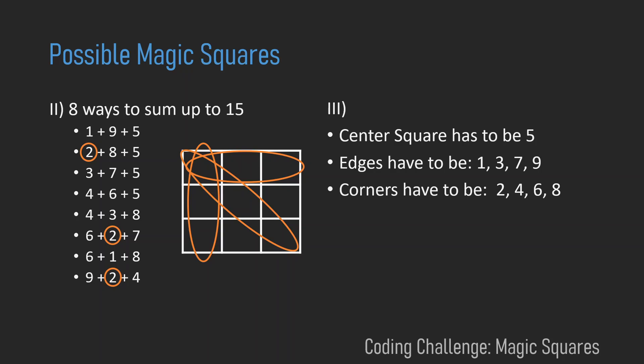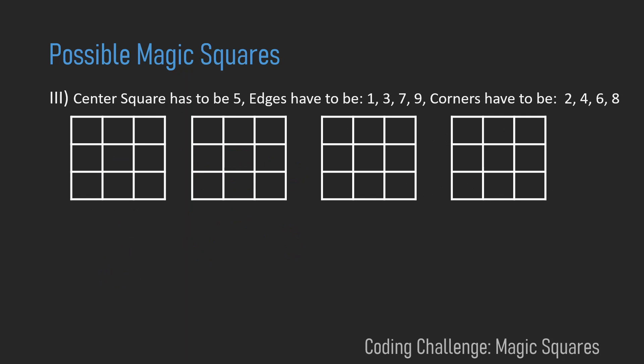And this allows us to write down all of them. Let's start by filling in those four squares. Let's start by inserting 5 to the center. And now let's place the 1 around the 5. One has to be an edge, so those are all places the 1 can be in.